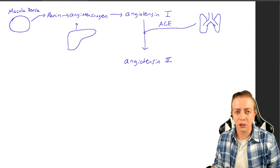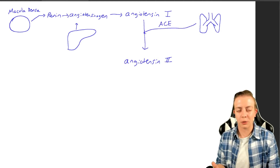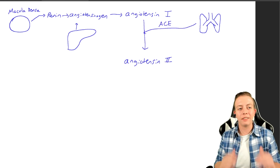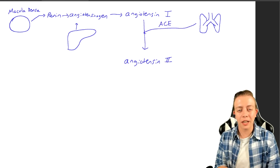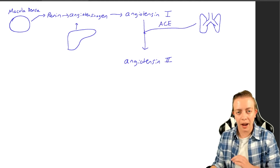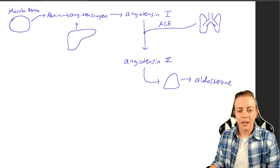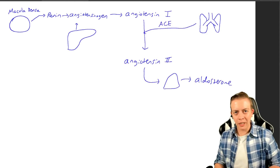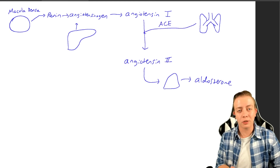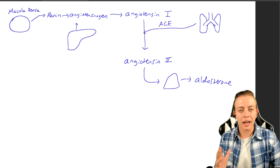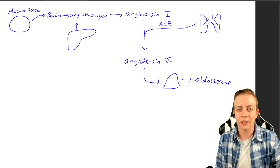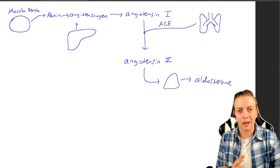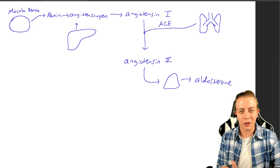Angiotensin 2 has a whole other mechanism of blood pressure regulation that we won't cover today. What we will cover is aldosterone. Angiotensin 2 is a stimulator for the production of aldosterone, which is why we have this whole pathway. Angiotensin 2 travels to the adrenal cortex and stimulates production of aldosterone. I've made videos about aldosterone production in the adrenal cortex if you want to see that pathway, but the key point is: we get aldosterone production.